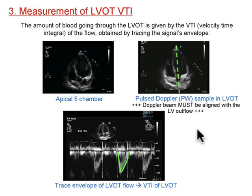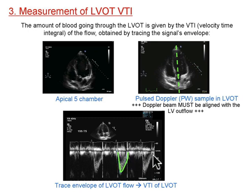What does that mean? You take the pulse wave Doppler — that TIE fighter cursor — and drop it right across the aortic valve in the apical fifth chamber. You activate the waveform, and what it gives you has time on the x-axis and velocity on the y-axis. That envelope is the velocity-time integral. The velocity-time integral, in combination with the LVOT area, times heart rate, gives you cardiac output.